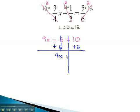Now we have 9x equals 16. Finally, to get x alone, we divide both sides by 9, and x is equal to the fraction 16 over 9.